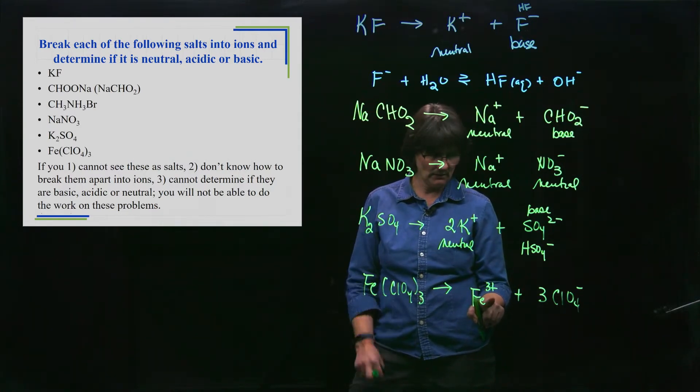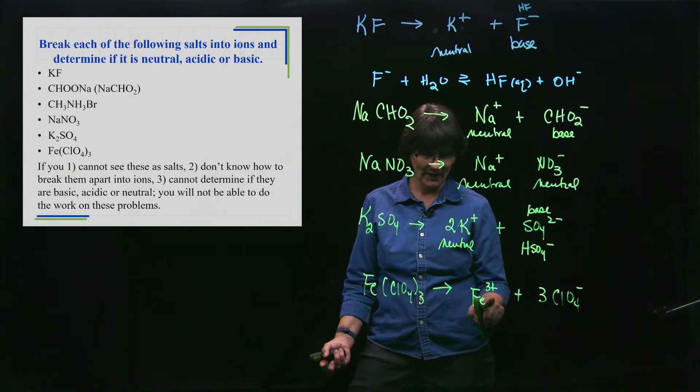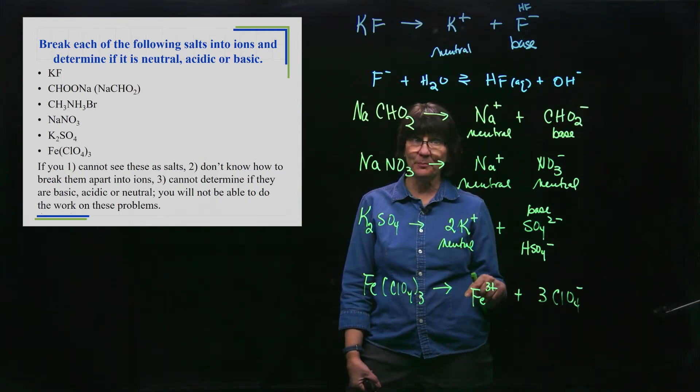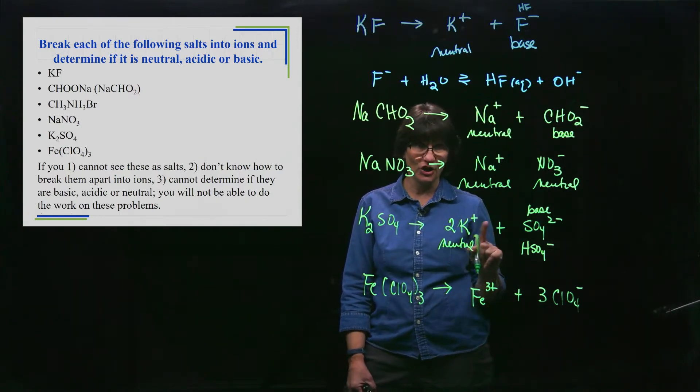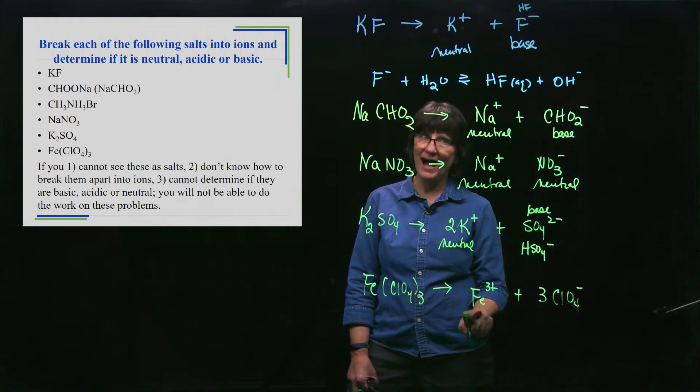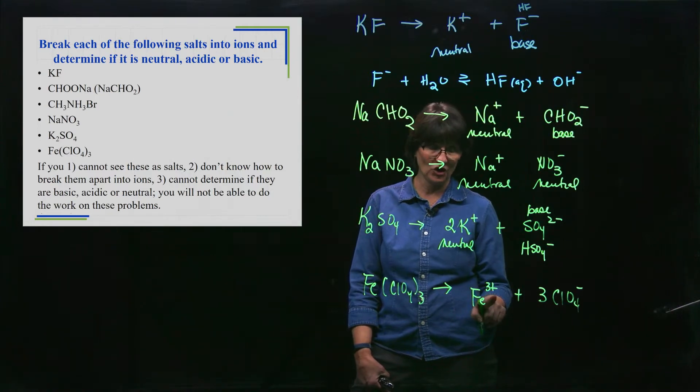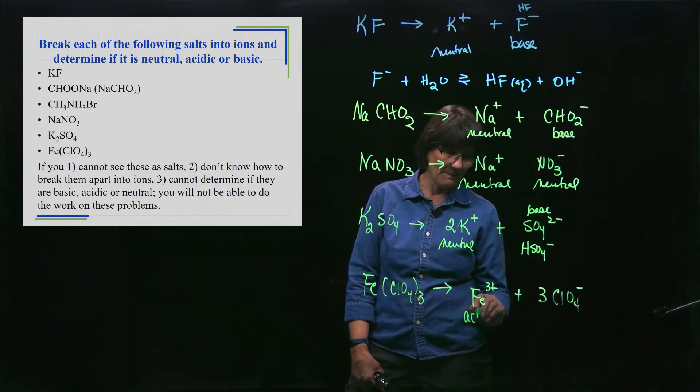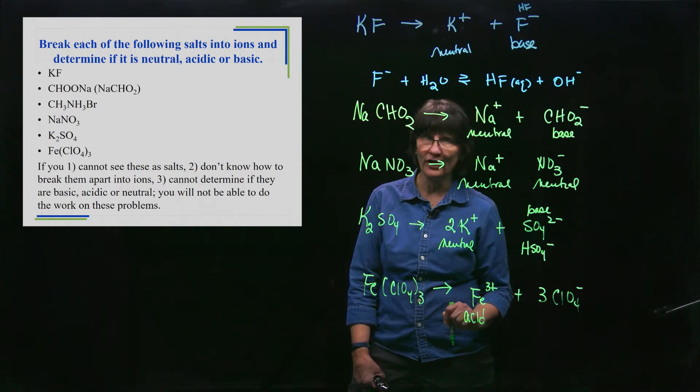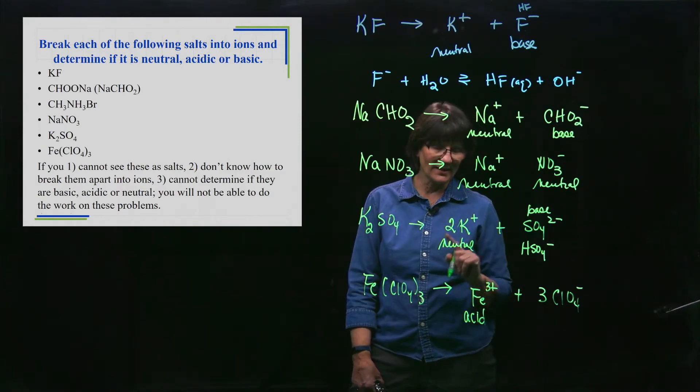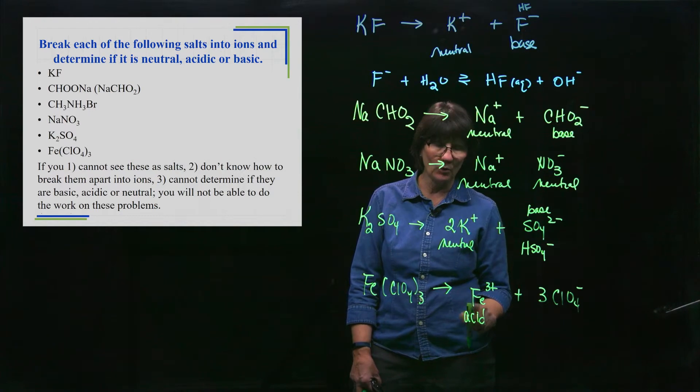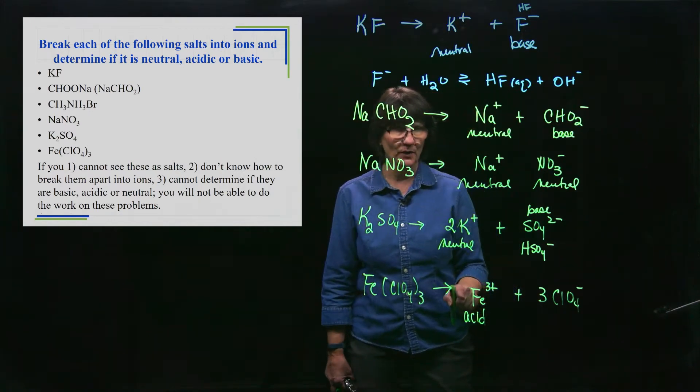It doesn't have a proton to donate - there's no H on it. It's not going to accept a proton because it's positively charged. But is it a small, highly charged ion? When I define highly charged, three or higher is highly charged. So this is an example of an acidic cation by what I keep calling the funky way. When it surrounds itself by water - because we've dissolved it in water - the water that's attached to it makes it acidic. So that's acidic.